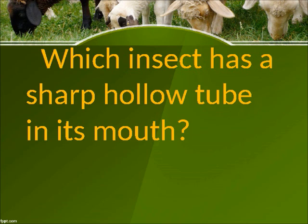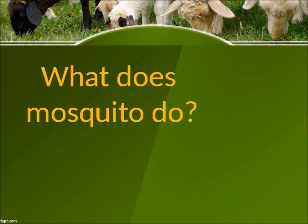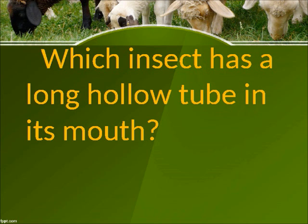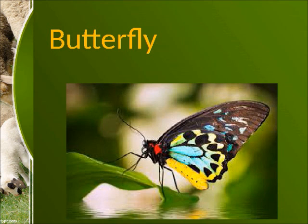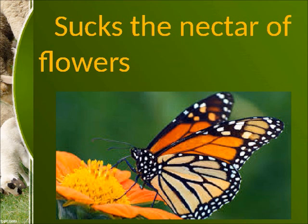Which insect has a sharp hollow tube in its mouth? Mosquito. What does a mosquito do? It sucks your blood. Which insect has a long hollow tube in its mouth? Butterfly. What does a butterfly do? It sucks the nectar of flowers.